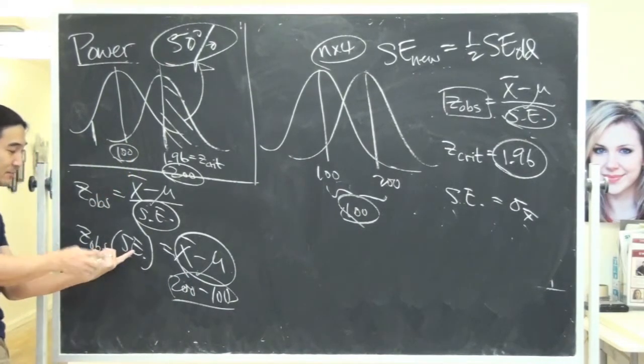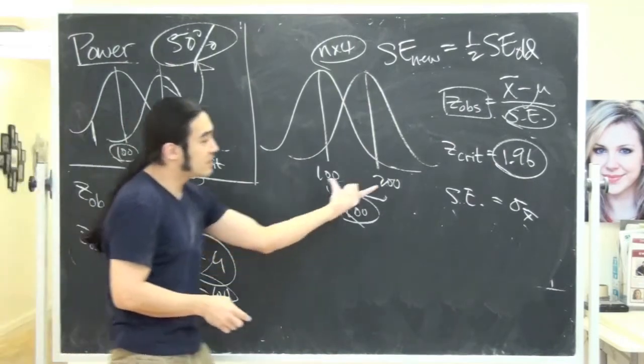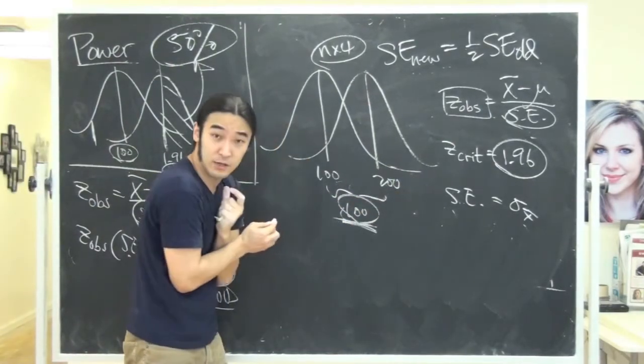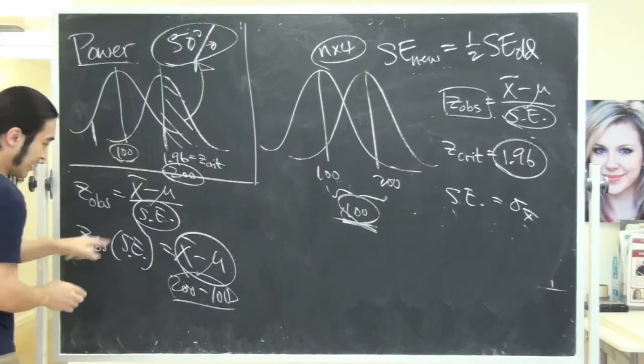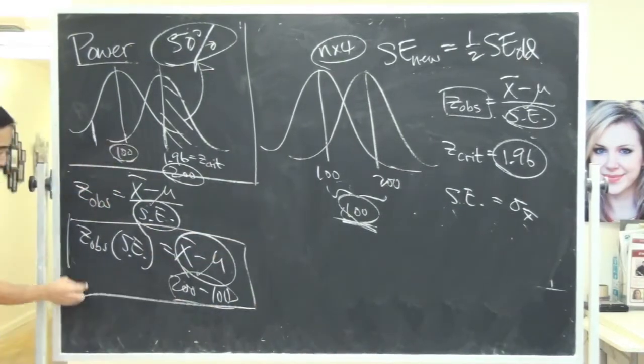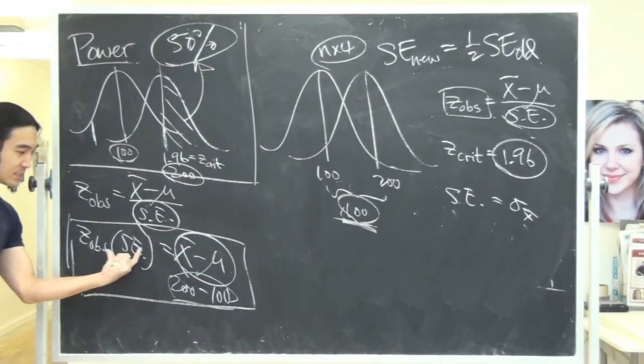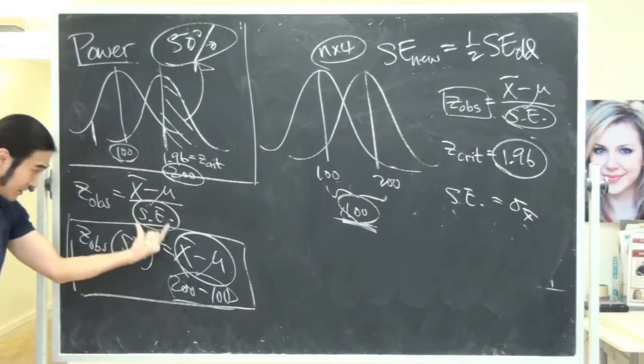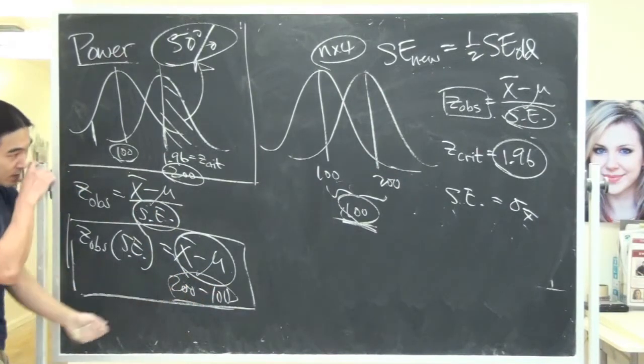That difference we said was 100 points, right? That difference is the same here as it is over here, right? It doesn't change. The difference is still 100 points. So, if I have this, this is one formulation, right? This guy times this guy gives you the difference. Just manipulating this equation, and that's 100 points.